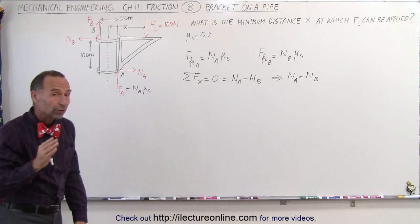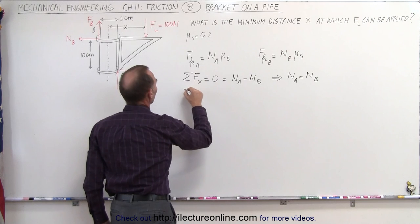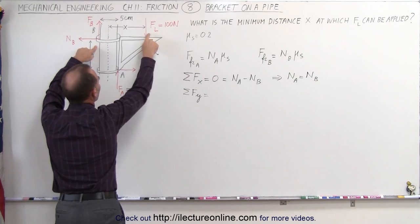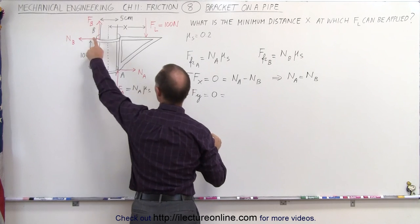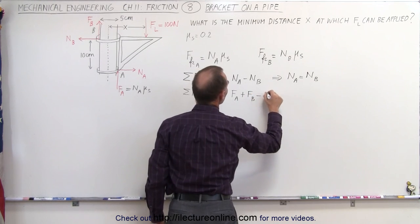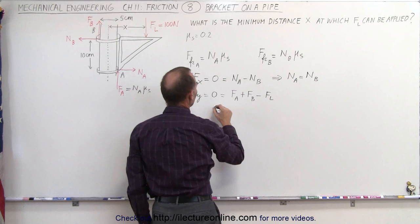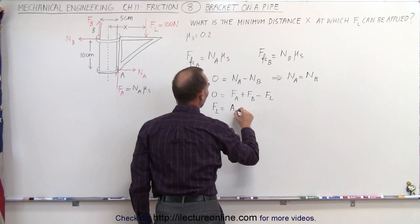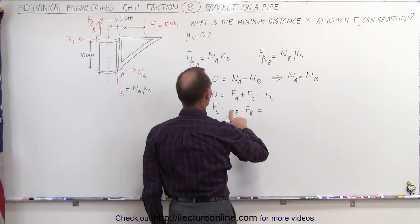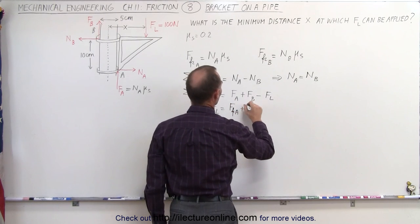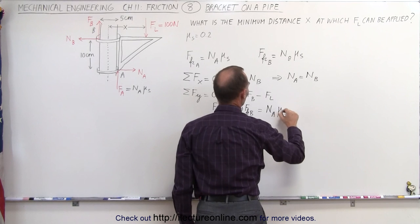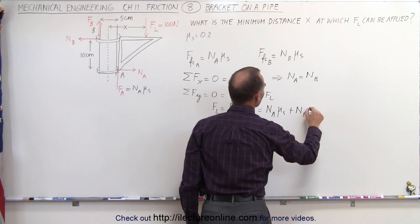We can also sum up all the forces in the y-direction. Those are made up of the two friction forces plus the load force, and they should add up to zero. We have the two positive friction forces acting upward: friction force at A plus friction force at B, minus the load force. So the load force F_load is simply equal to F_A plus F_B. We can replace the friction forces, so this becomes the normal force at A times the coefficient of friction plus the normal force at B times the coefficient of friction.